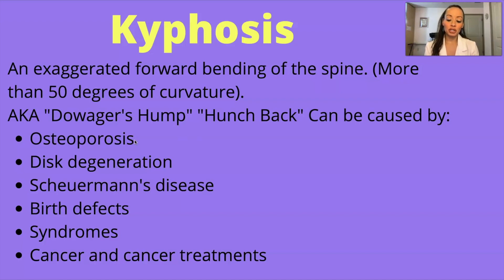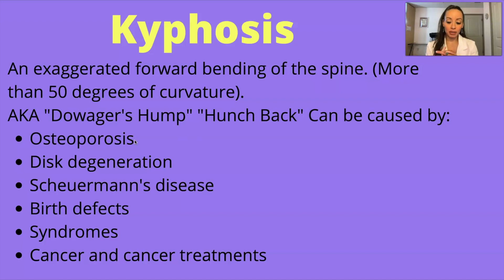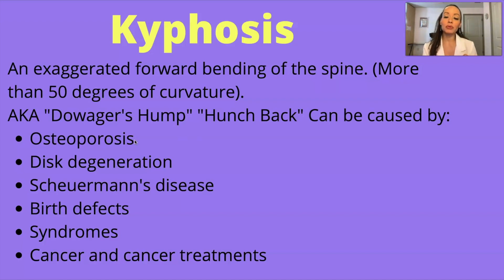Disc degeneration: those soft circular discs that sit between the spinal vertebrae act as cushions. With age, these discs dry out and shrink, which often worsens kyphosis. Scheuermann's disease typically begins during a growth spurt before puberty, and boys are affected more than girls. Birth defects — spinal bones that don't develop properly before birth — can also cause kyphosis, as can certain syndromes such as Ehlers-Danlos syndrome and Marfan syndrome. Cancer in the spine can weaken vertebrae and make them more prone to compression fractures, as can chemotherapy and radiation treatments.